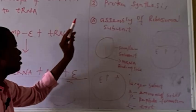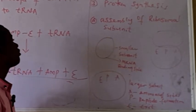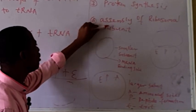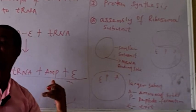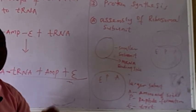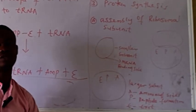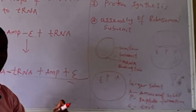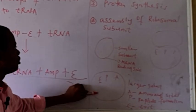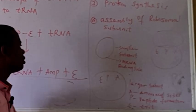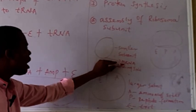The third step is protein synthesis. Under protein synthesis we have three subdivisions. The first is assembly of ribosomal subunits. Ribosome is one of the organelles that helps in protein synthesis. In the ribosome we have two subunits: the smaller subunit and the larger subunit. In the smaller subunit we have one binding site, and that is the mRNA binding site.